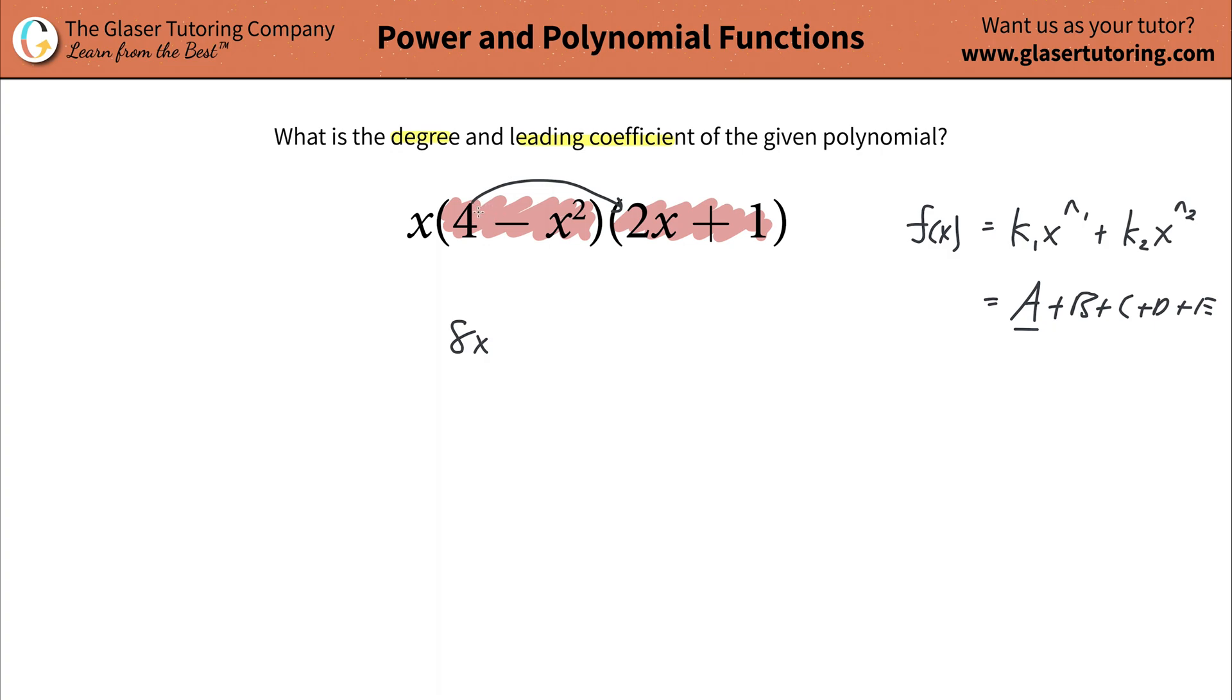Then it would be four times one, so that would be plus four. Then you do negative x squared times 2x, which would be negative 2x to the third. And then you do the negative x squared plus one, you multiply it, and then that would just be simply negative x squared.